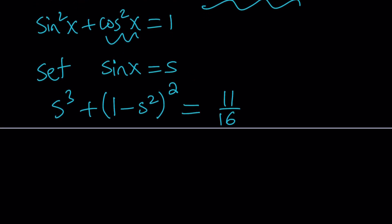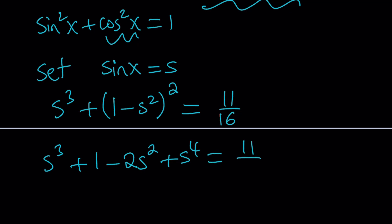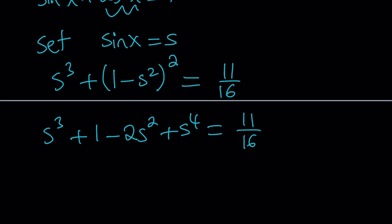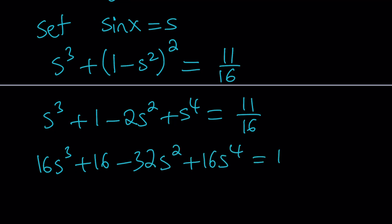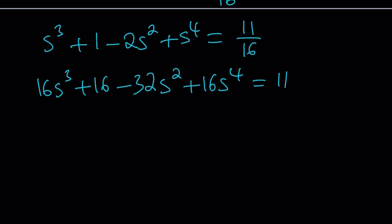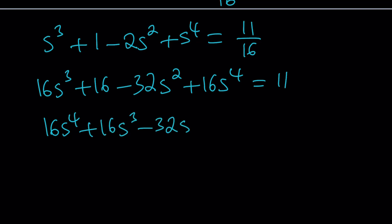Let's simplify by expanding: we get s cubed plus 1 minus 2s squared plus s to the fourth power equals 11 over 16. Multiplying both sides by 16 and putting everything on the same side, we get a quartic equation in s. Writing it in standard form, 16 minus 11 equals positive 5, and this is our quartic.